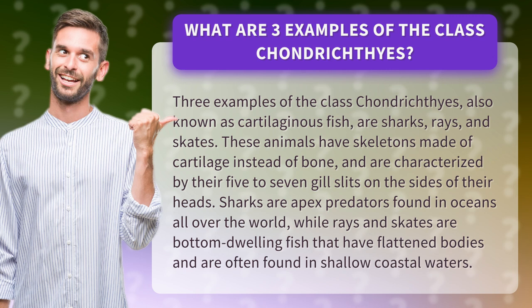These animals have skeletons made of cartilage instead of bone, and are characterized by their five to seven gill slits on the sides of their heads. Sharks are apex predators found in oceans all over the world, while rays and skates are bottom-dwelling fish that have flattened bodies and are often found in shallow coastal waters.